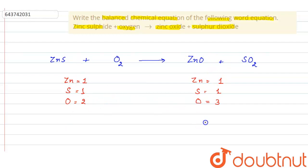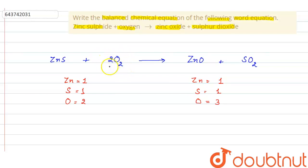These numbers should be equal. Zinc atoms are equal, sulfur atoms are equal, but oxygen atoms are not equal on both sides. To equalize the oxygen atoms, suppose we put 2 in front of O₂. Now when we write 2 in front of O₂, the oxygen atoms become 4 on the reactant side.